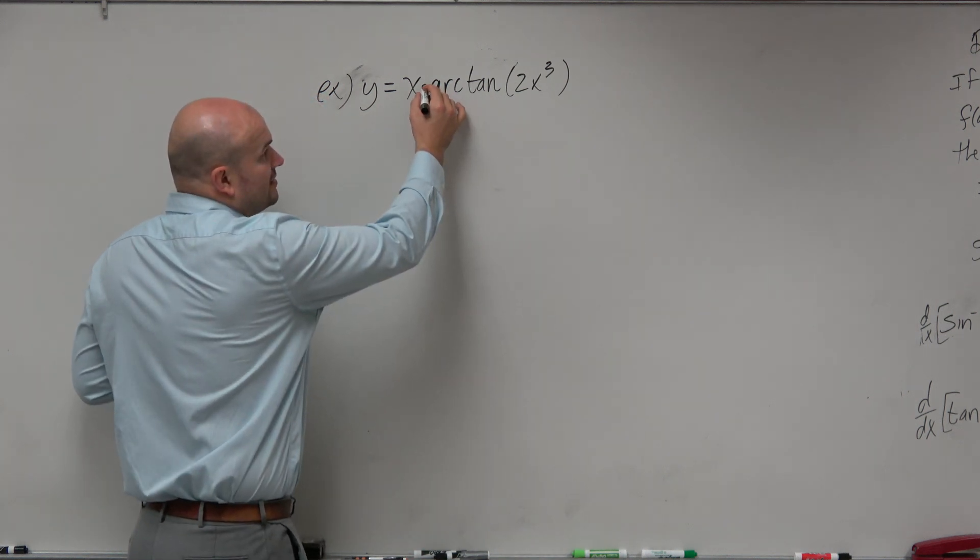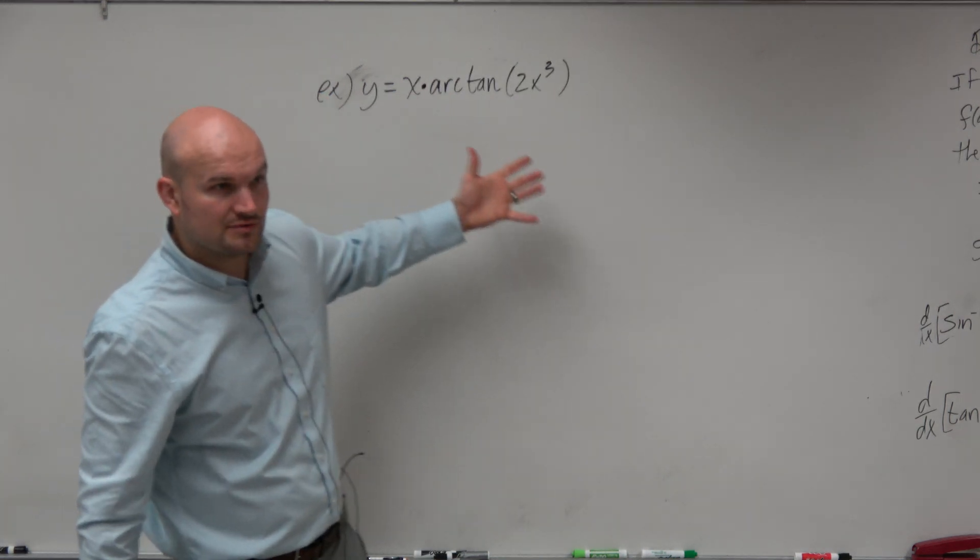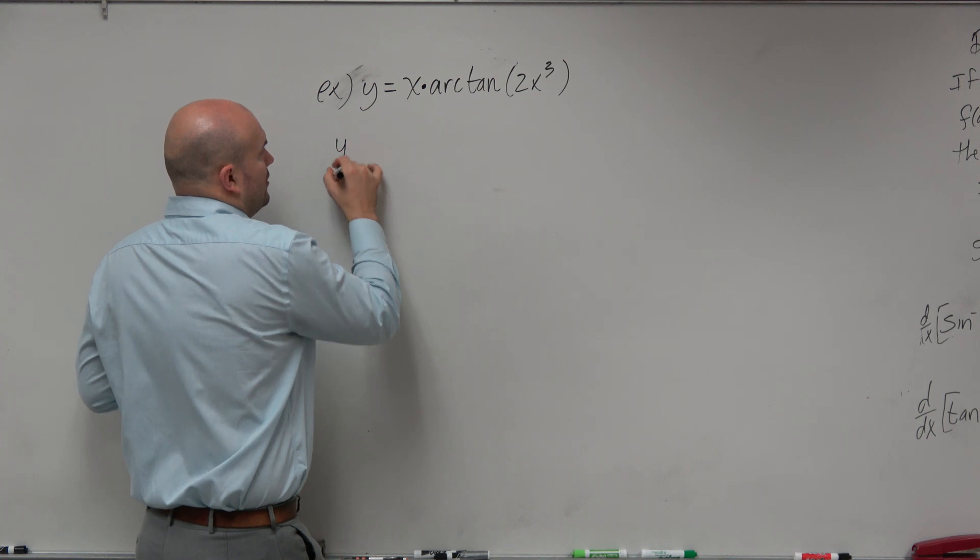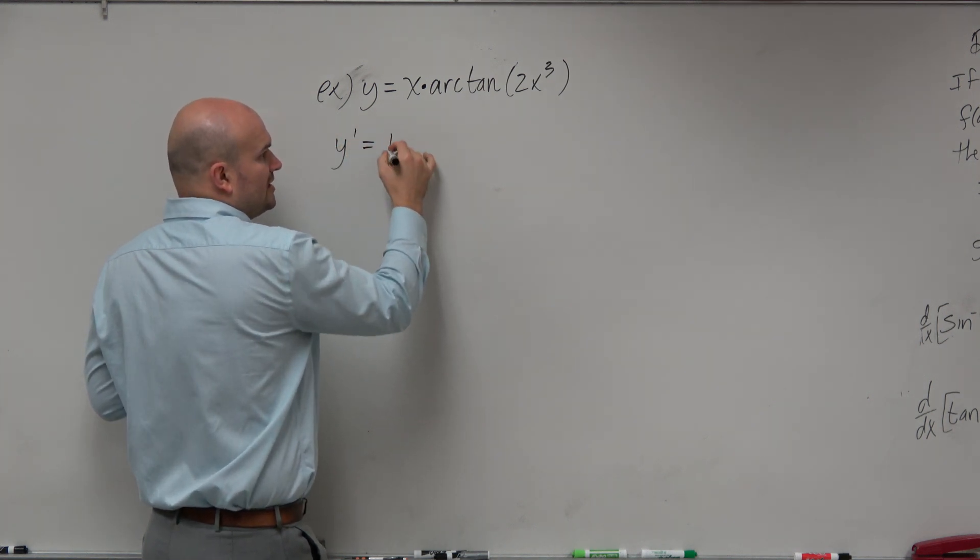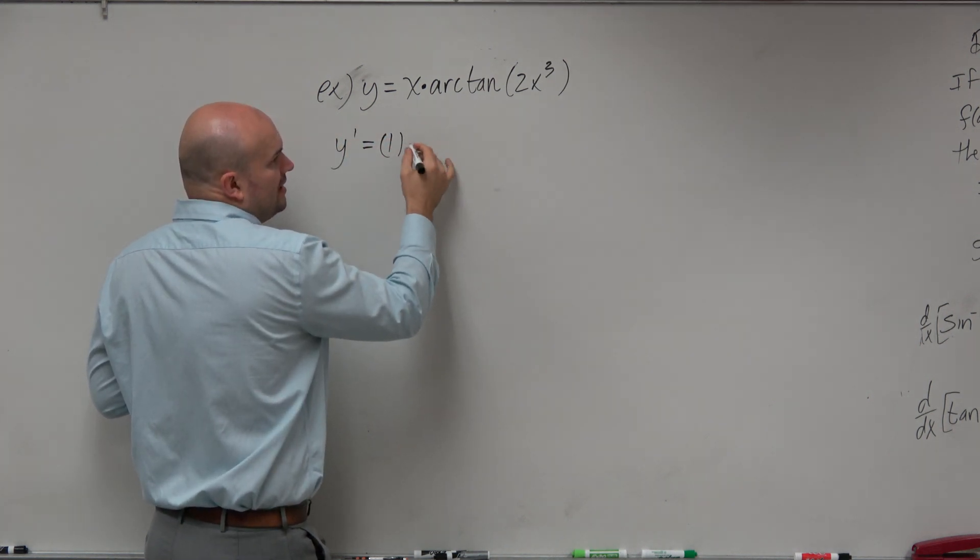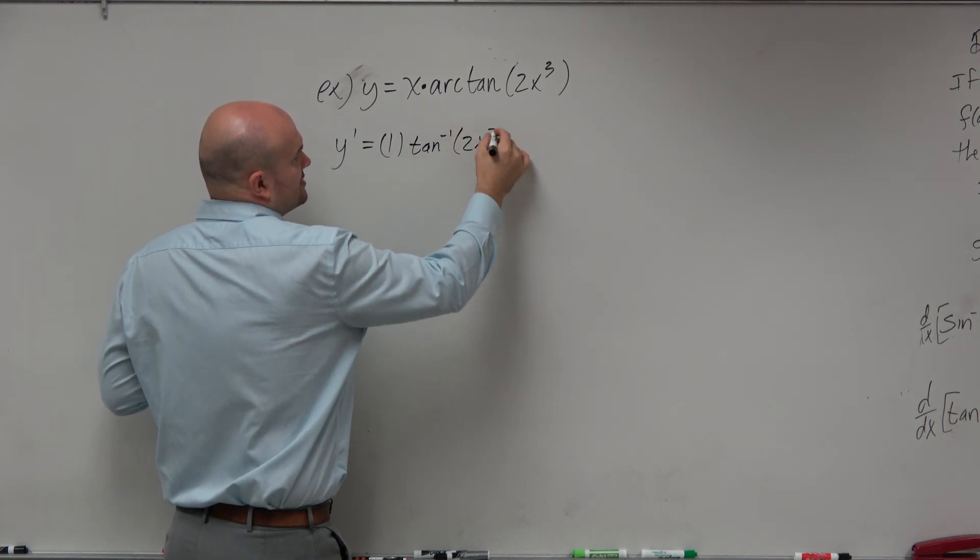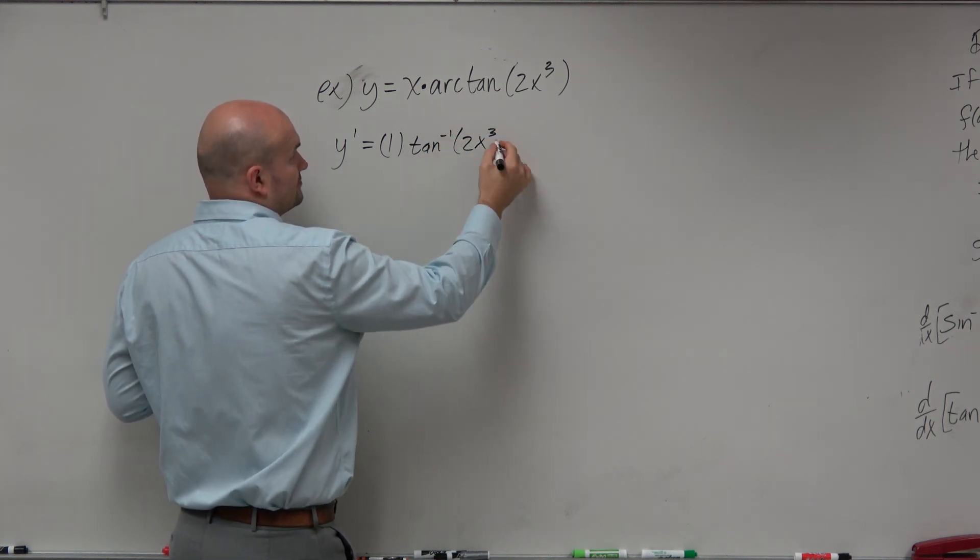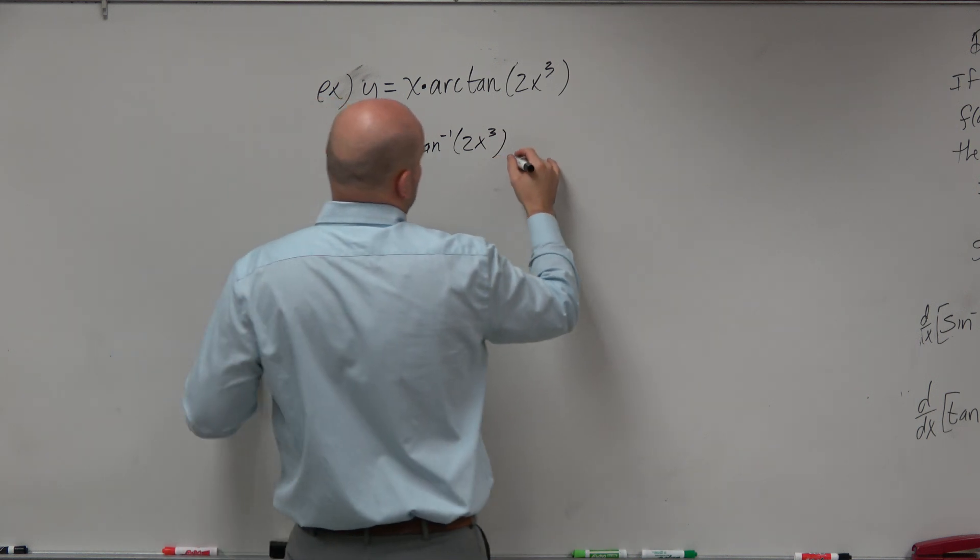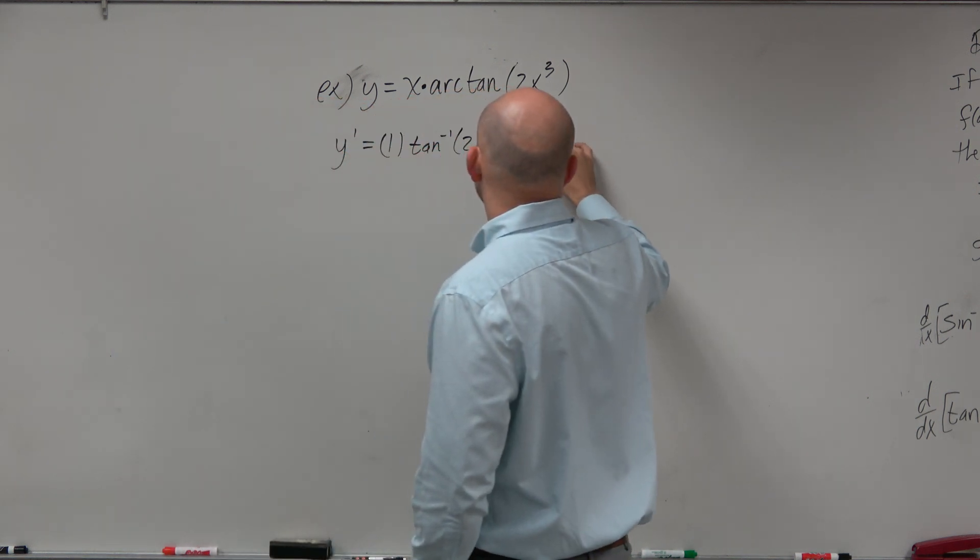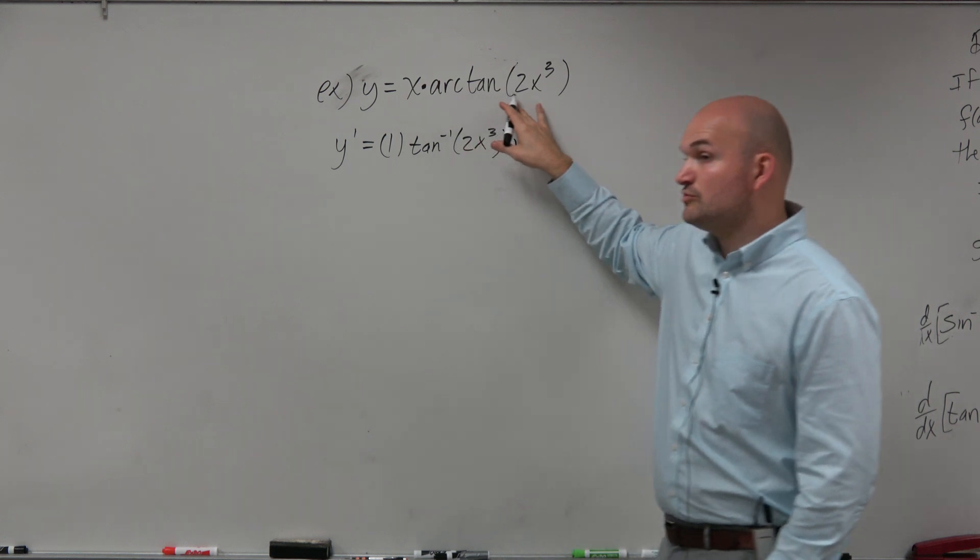And what we notice here is in this example, we have product rule. So if we're going to find y prime, we've got to make sure we apply the product rule. So it'd be 1 times tan inverse of 2x³, and that's going to be plus x now times the derivative of this.